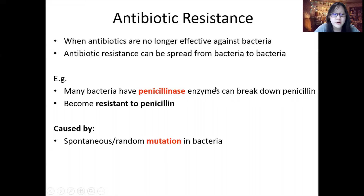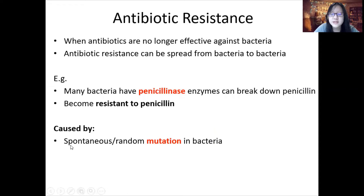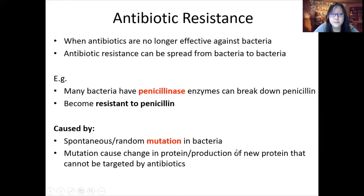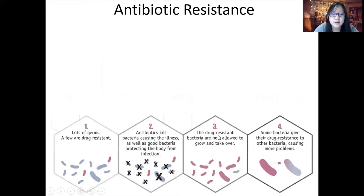Antibiotic resistance is caused first by random mutation in bacteria. Random mutation causes a change in protein or production of a new protein that cannot be targeted by antibiotics. Mutation results in new alleles, meaning a change in mRNA and a change in protein, so the bacteria may no longer be specifically targeted by a particular antibiotic.